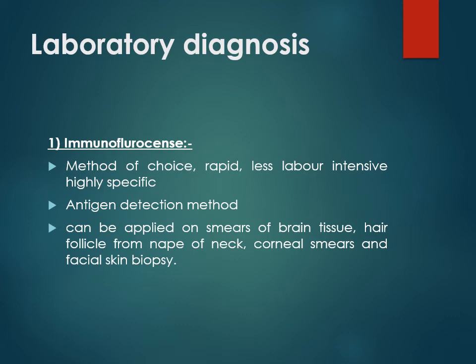Diagnosis is based on a history of animal bite. The method of choice is immunofluorescent staining — a rapid, less labor-intensive method that detects the rabies virus antigen. In live patients, samples can be taken from hair follicles at the nape of the neck, corneal smears, and facial skin biopsy. Post-mortem, brain tissue is used for immunofluorescence.